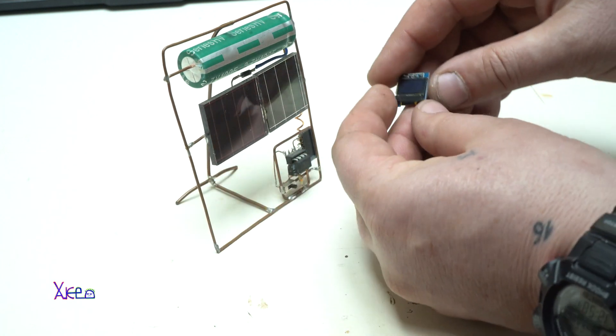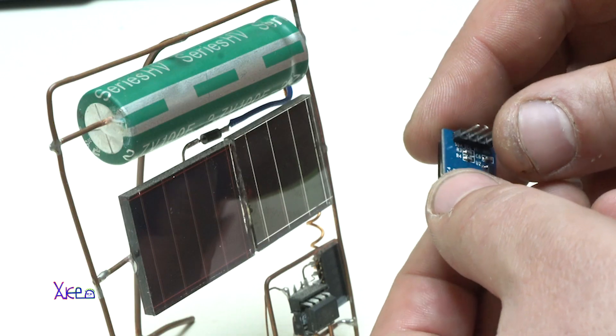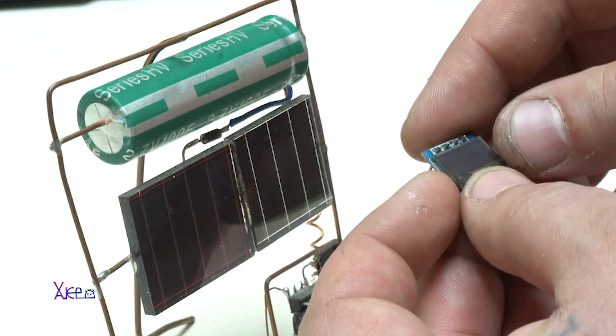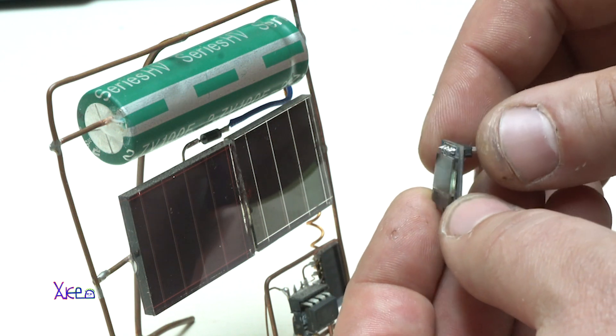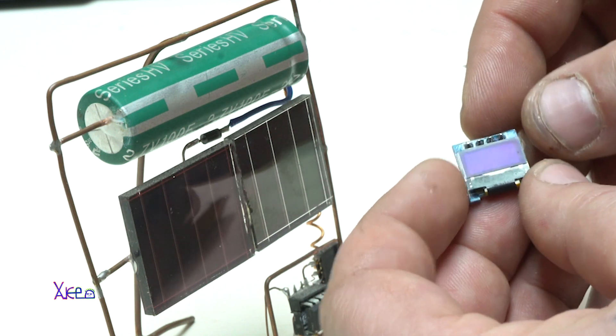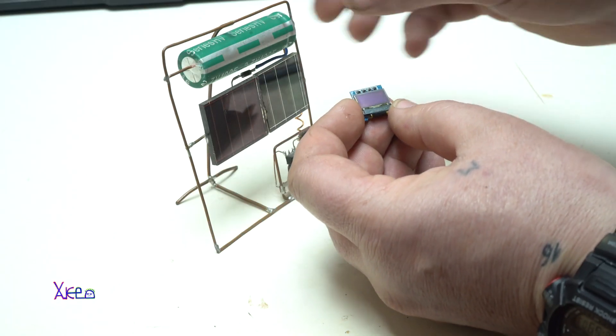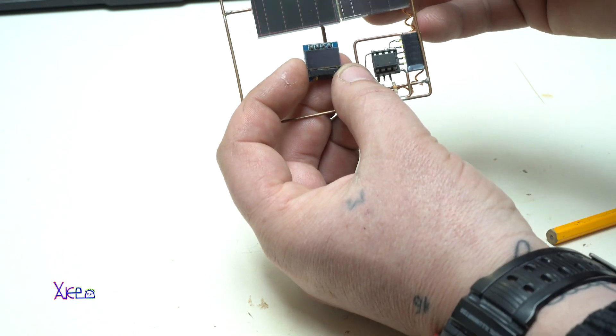I also have this tiny OLED screen for Arduino. It's 64 by 32 pixels. And if someone writes the code for some operation I can add the screen right here.